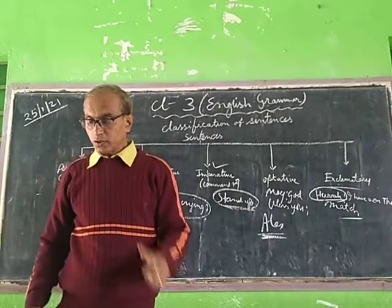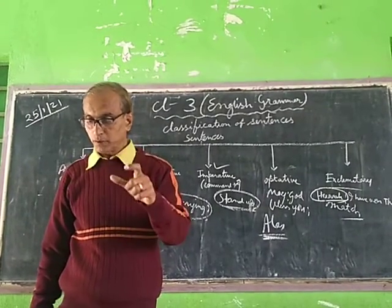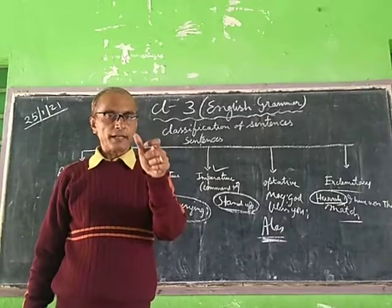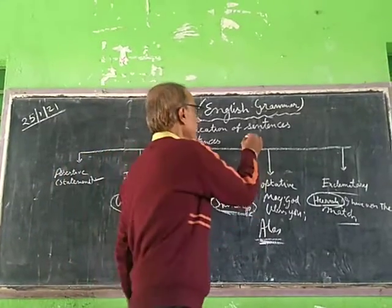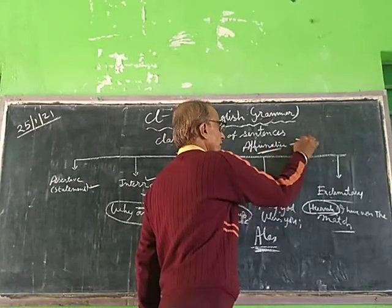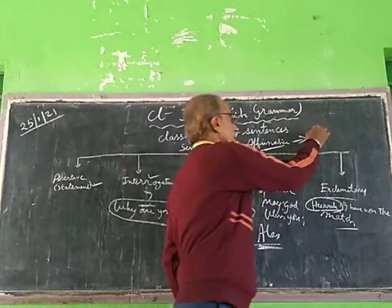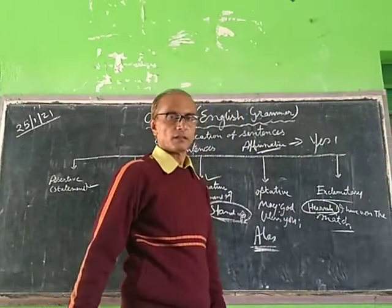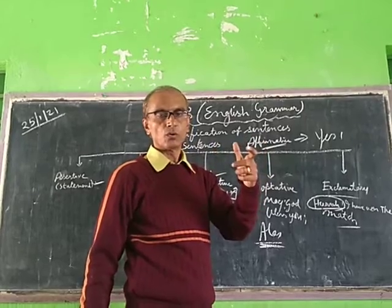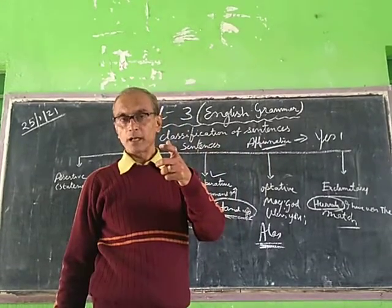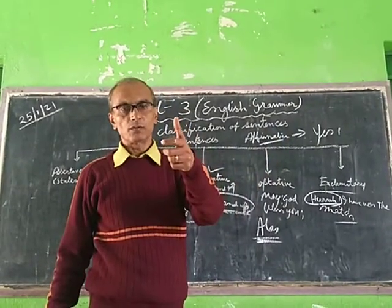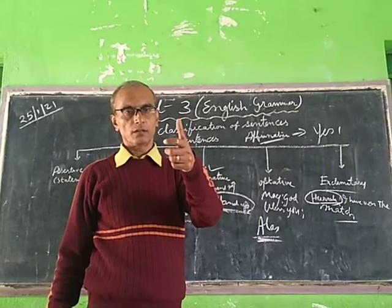Now the last portion of the chapter is on page 19 — affirmative and negative. Affirmative means affirmation, yes. Negative means no — 'I will not go.' Affirmation: yes — 'I will go.' Is it clear?